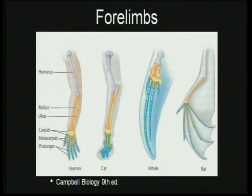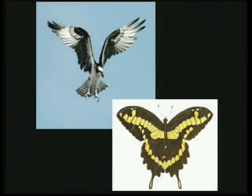Contrasting with homologous organs are analogous organs, where the origin is totally different but the purpose is the same. For example, wings of birds and wings of butterflies are both used for flying but have completely different structures and origins. Analogous organs do not help us trace evolutionary relationships, but homologous organs do.